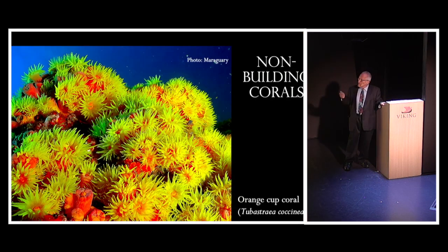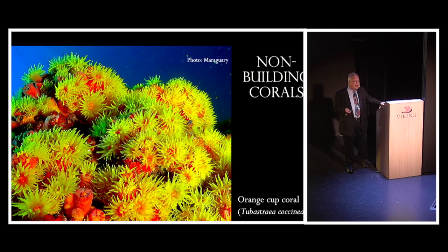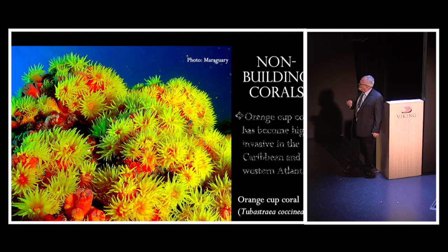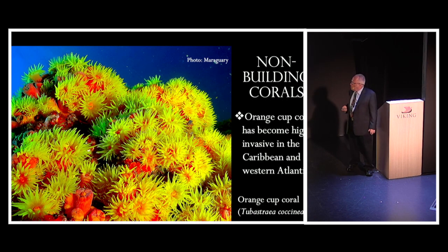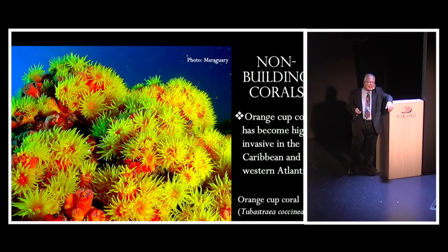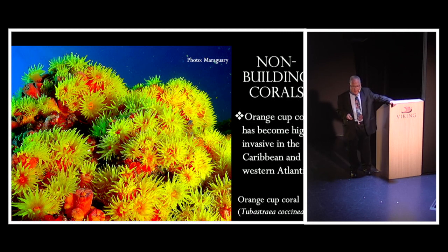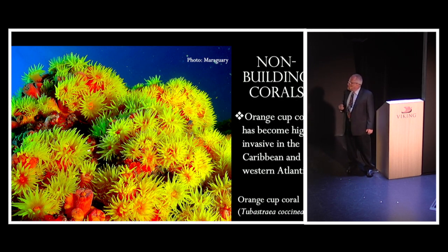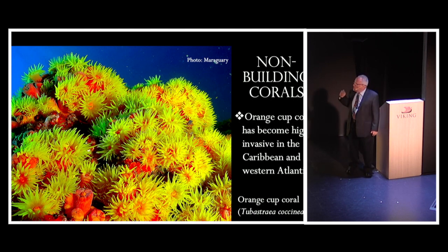There are even corals that don't produce any skeleton at all — they just sit there catching things. This one is called orange cup coral. It's a Pacific coral that has unfortunately gotten loose in the Caribbean and Atlantic and become an invasive pest there — perhaps escapes from aquaria. But since it produces no skeleton, its role is purely decorative.